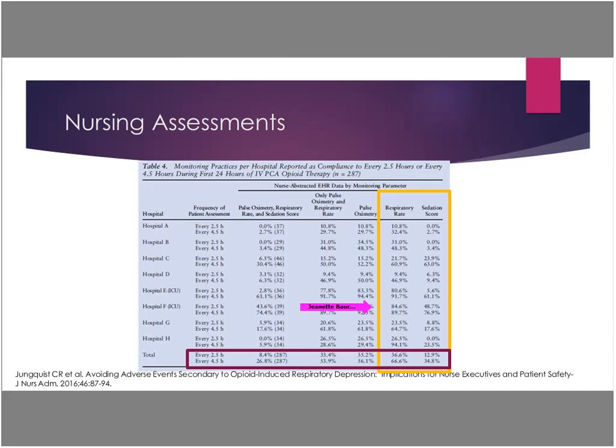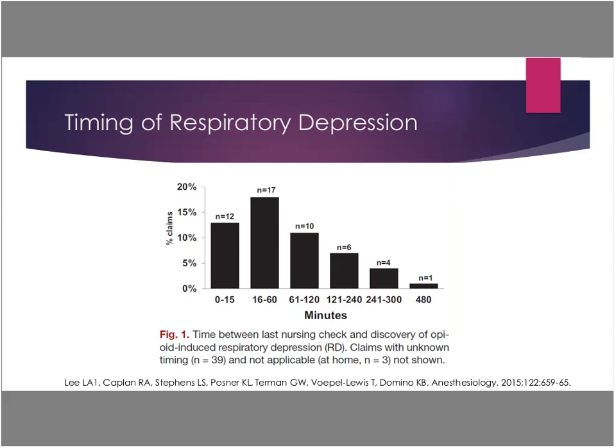Looking at our closed claims data — lawsuits with poor outcomes on patients who had opioid-related respiratory events — there was a nursing check-in in about 14% of cases within 15 minutes, in about 20% within the hour, and in about 12% within two hours. About 60% of patients were noted to be somnolent prior to a respiratory event. What I'm trying to show is that even when your nurse was in that room recently, patients can still have a really bad sentinel event outcome.